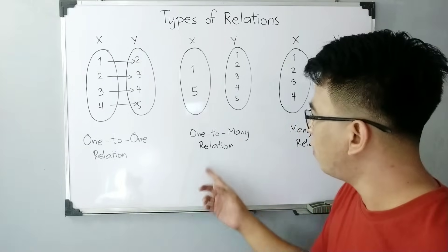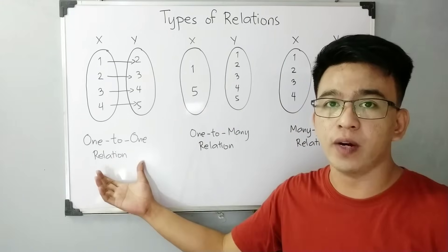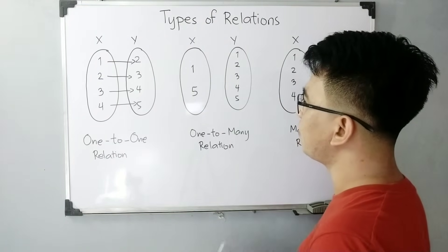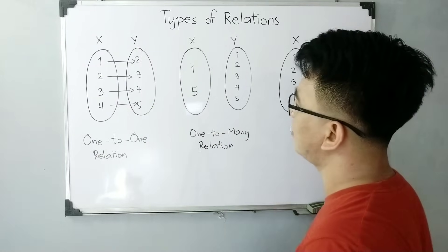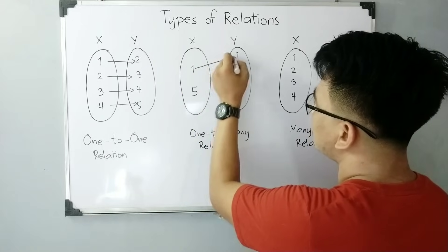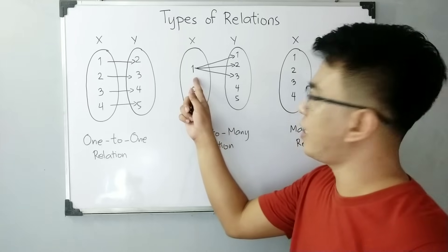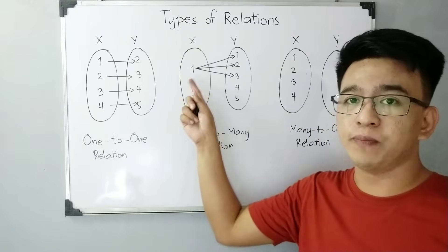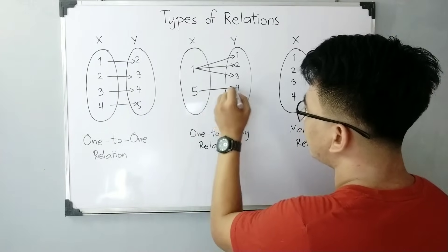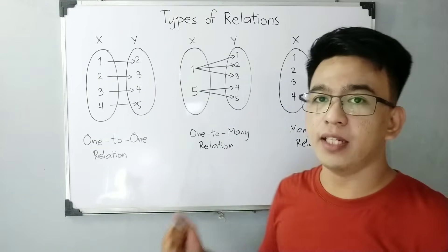For the second type, we have one-to-many relation — this is different from one-to-one. In one-to-many, for example, we have two different values for x: domain of 1 and 5. The value 1 corresponds to three different y values, and 5 corresponds to two values: 5 and 4. So this is an example of a one-to-many relation. Next is many-to-one, which is the reverse of one-to-many — four values of x correspond to a single output or a single value of y.